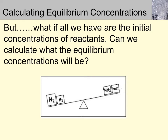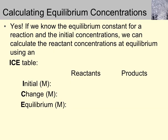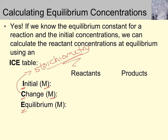What if we have initial concentrations rather than equilibrium concentrations? Is there any way to get to equilibrium concentrations? Yes. The ICE table gets its name from three sets of values: the initial concentrations, the change (determined by the stoichiometry of the balanced chemical equation), and the equilibrium concentrations, which are the values used to determine the equilibrium constant.